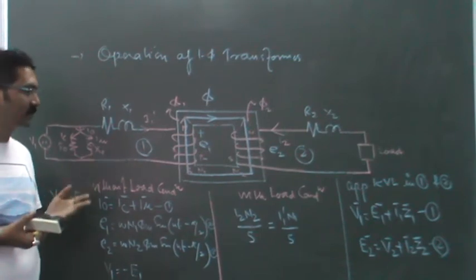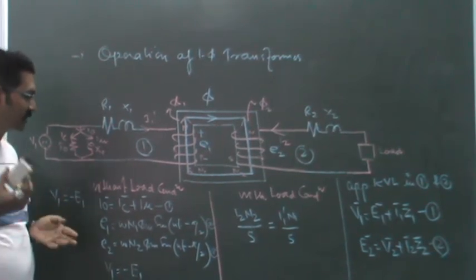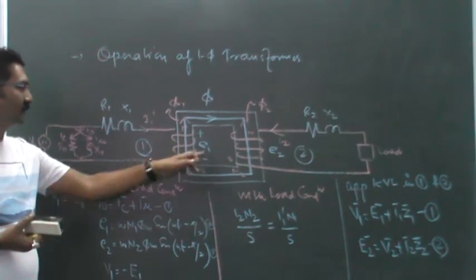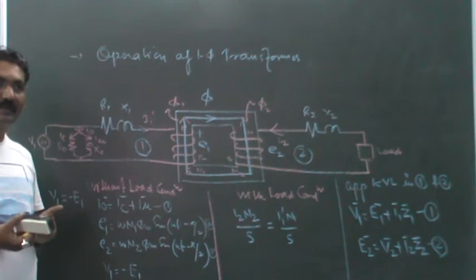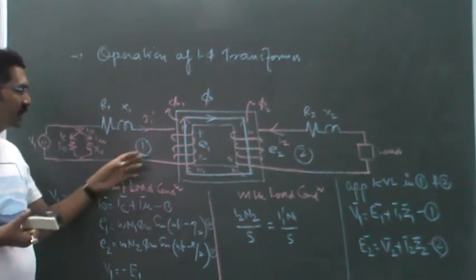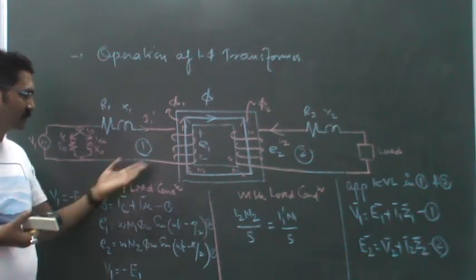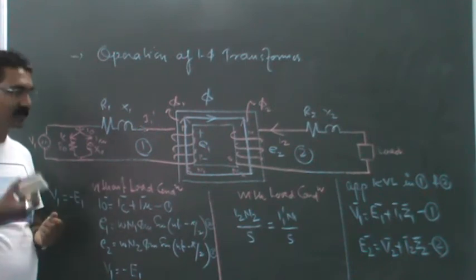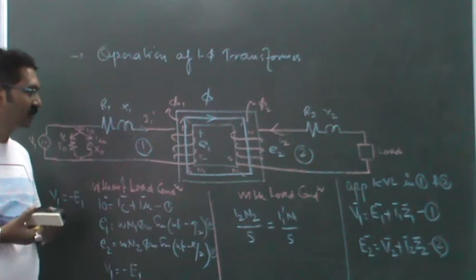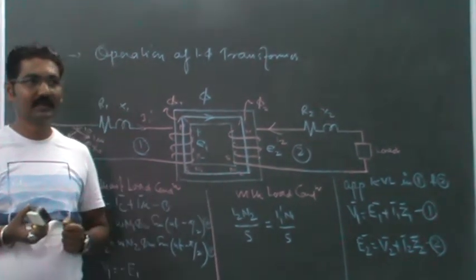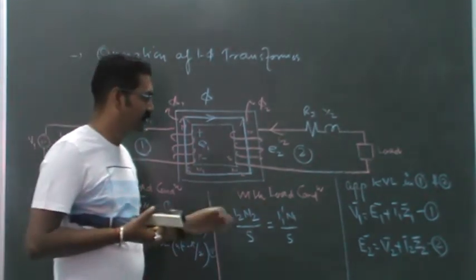E1 opposes the supply voltage V1 because of its nature, which can be explained by Lenz's law. The quantity of E2 can only be obtained after loading the transformer on the secondary.